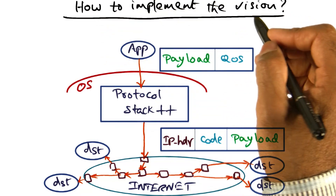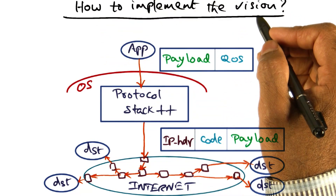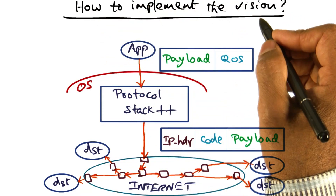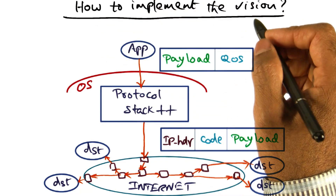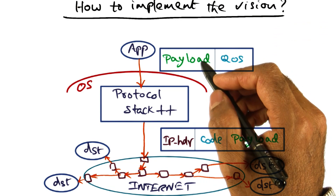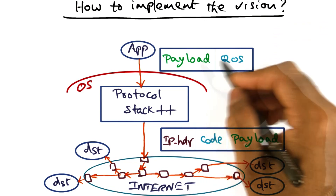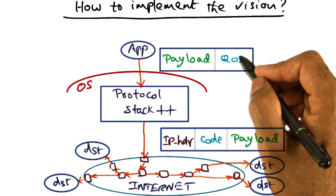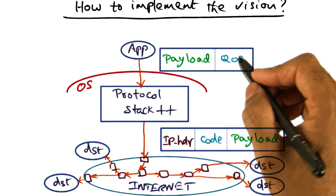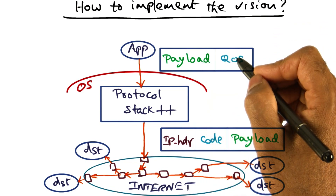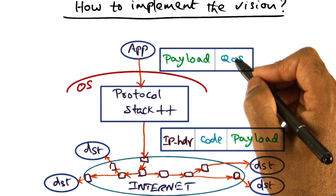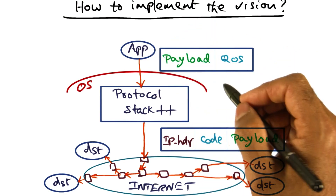Now that we've motivated the vision, let's see how we can implement it. In order to implement this vision, the operating system should provide quality of service APIs to the application.